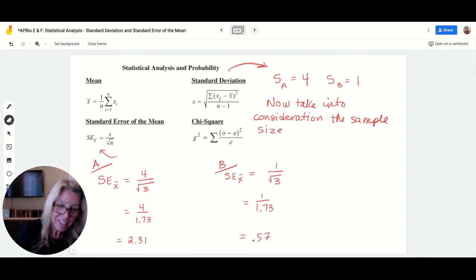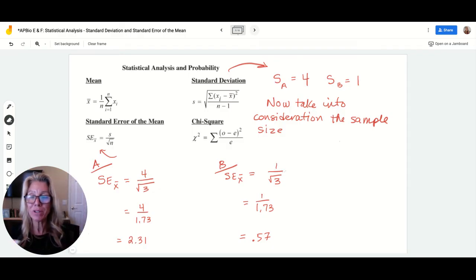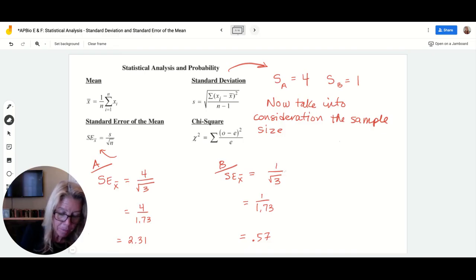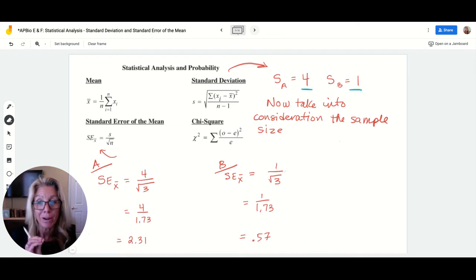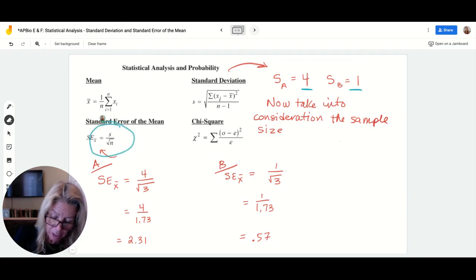Now let's take a look now, just to show you how you would do standard error. Because a lot of times it is actually standard error bars that you see plotted. All you have to do for standard error is you take your standard deviation that you already calculated. So our standard deviation for sample A was four. Our standard deviation for sample B was one. The smaller the deviation, the better.